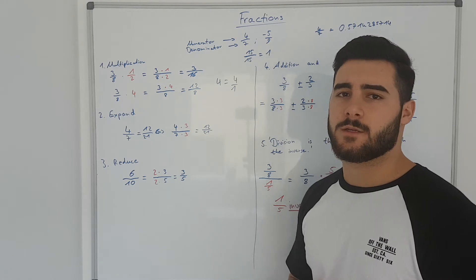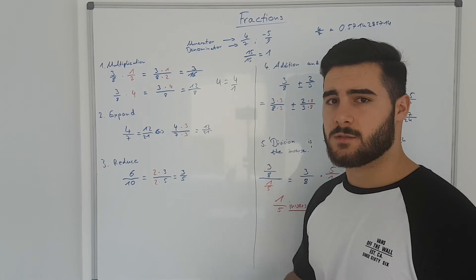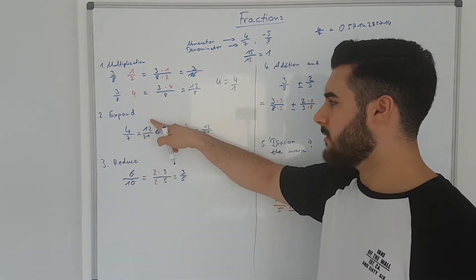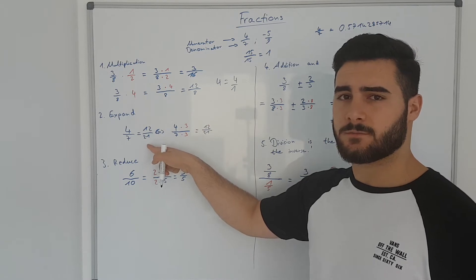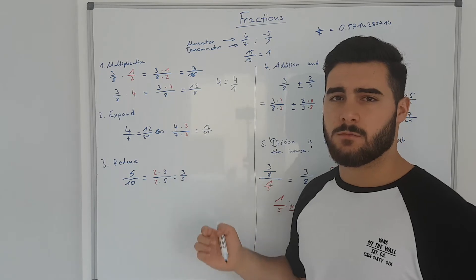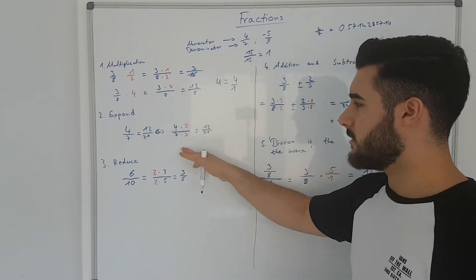Other things you can do with fractions which are based on multiplications. We can expand fractions, for example, you see 4 over 7 is the same as 12 over 21. How do you do that? So in this case, we just expand with three. And as you've seen before, why is that the same?